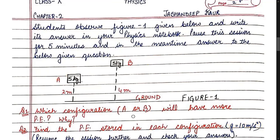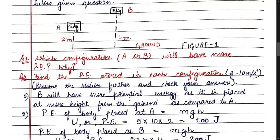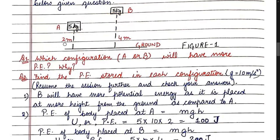For question one: B is at a greater height from the ground compared to A, so B will have more potential energy — more gravitational potential energy than A, because B is placed at more height from the ground.